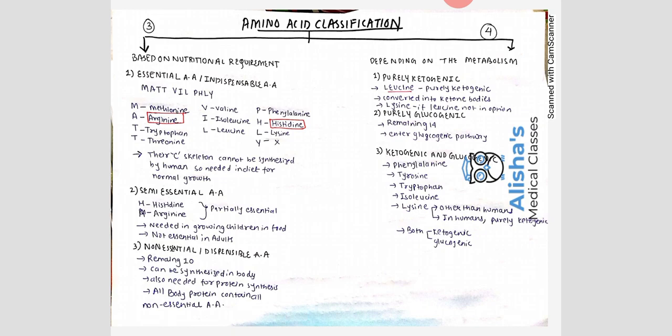Purely glucogenic amino acids are all amino acids except leucine, phenylalanine, tyrosine, tryptophan, isoleucine, and lysine — so the remaining 14 amino acids are glucogenic. Phenylalanine, tyrosine, tryptophan, isoleucine, and lysine are both ketogenic and glucogenic. However, lysine in humans is purely ketogenic. This concludes the classification of amino acids — thank you for listening.